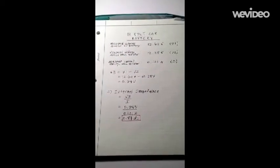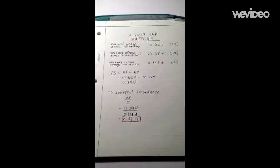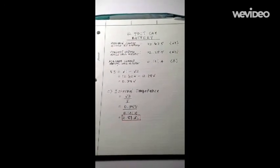The first calculation is to subtract the measured voltage across the 100 ohm resistor from the measured voltage across the 12-volt battery. 12.60 volts minus 12.28 volts is 0.34 volts.